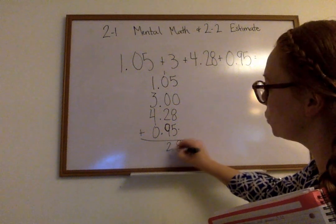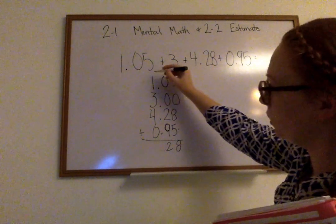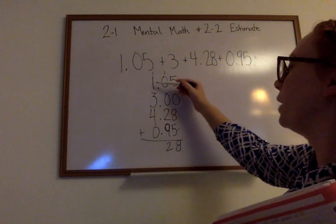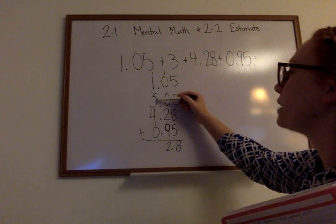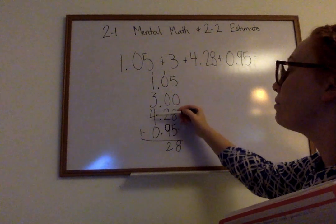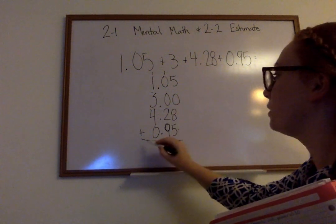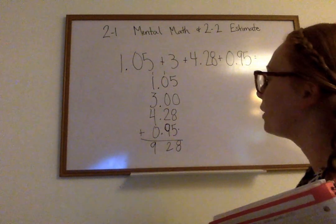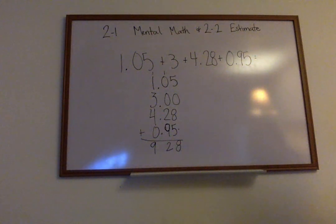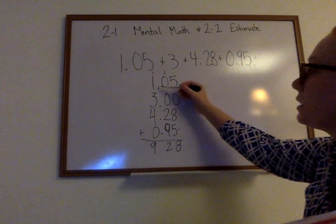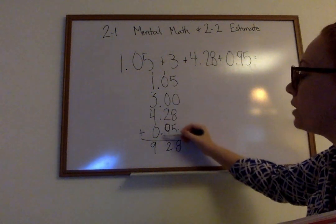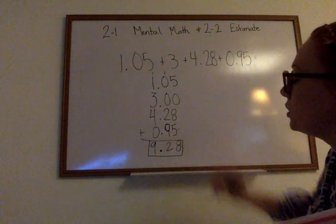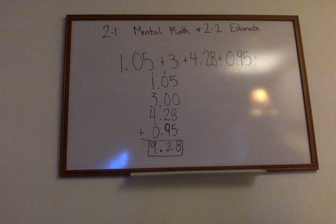9 plus 1 is 10. 10 plus 2 is 12. Write your 2, carry your 1. 1 plus 1 is 2. 2 plus 3 is 5. 5 plus 4 is 9. We write our 9. Now we need to look at what we're missing next. This decimal has to come all the way down and stay in its exact spot all the way into the answer. So the answer is 9.28.